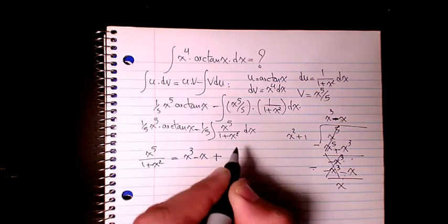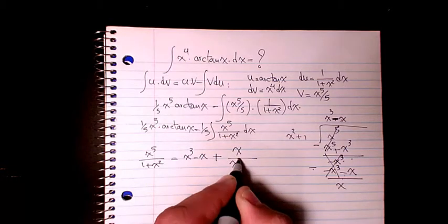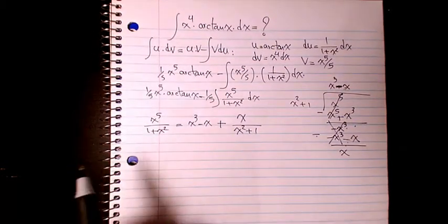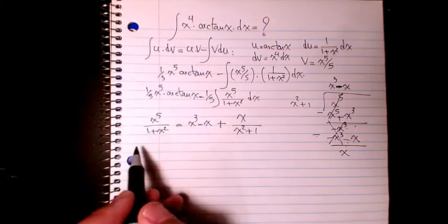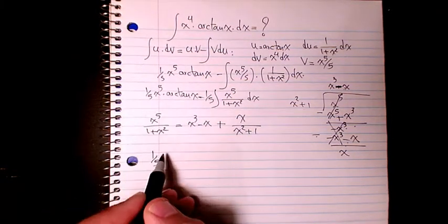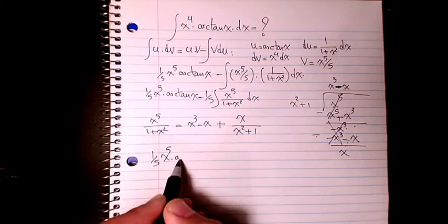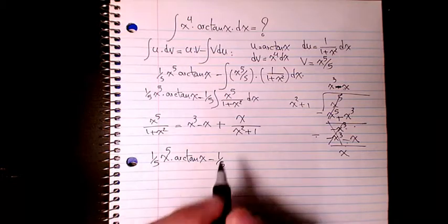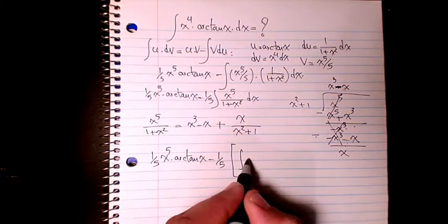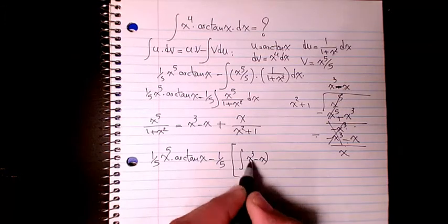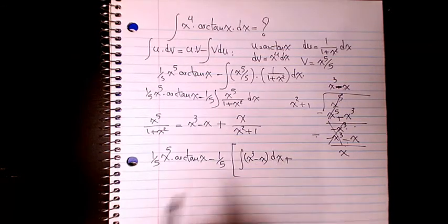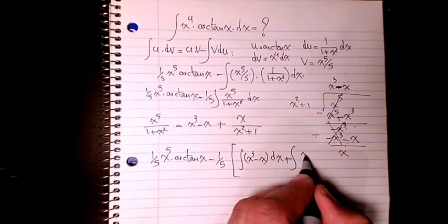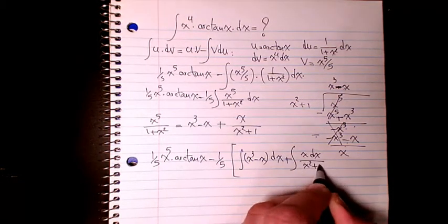So x⁵ over (1 + x²) equals x³ minus x plus x divided by (x² + 1). We can now write the integral as the integral of (x³ minus x) dx plus the integral of x over (x² + 1) dx.